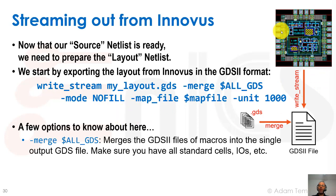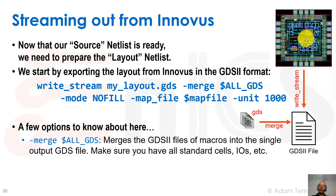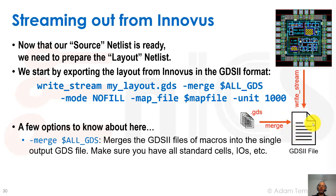When we write stream, it will write out everything inside our top-level layout. But a lot of things are abstracted away inside different blocks — standard cells or other IPs provided to us. So if we want one coherent GDS file that has everything, rather than separate files for each block, what we can do is merge them. This minus-merge command, given a list of all the GDS files of all these abstracts, will create one GDS file with our entire design inside, which is a much easier way to do it.